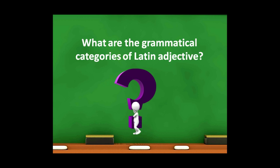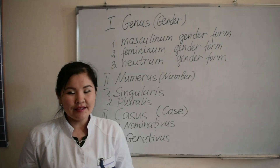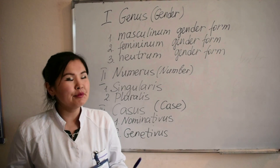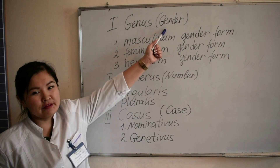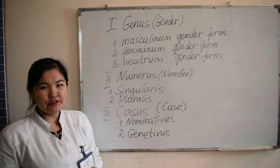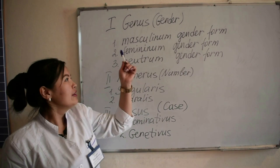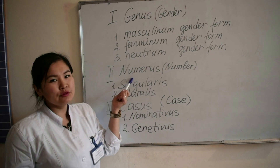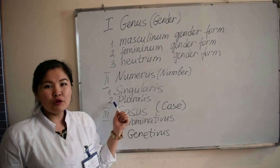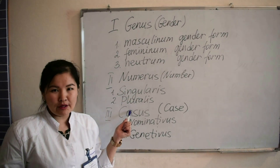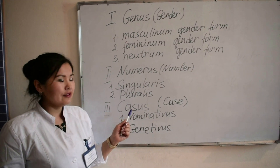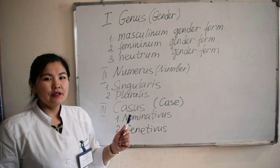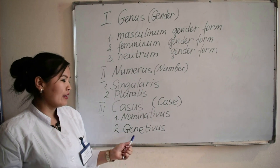What are the grammatical categories of Latin adjectives? Latin adjectives have the same grammatical categories as Latin nouns. The first category is genus, the category of gender. According to this category, Latin adjectives can have masculine gender form, feminine gender form, and neuter gender form. The second category is numerus, the category of number. Latin adjectives can be in singularis form and pluralis form. The third category is casus, the category of case. According to this category, adjectives can be in nominativus form and genitivus form.